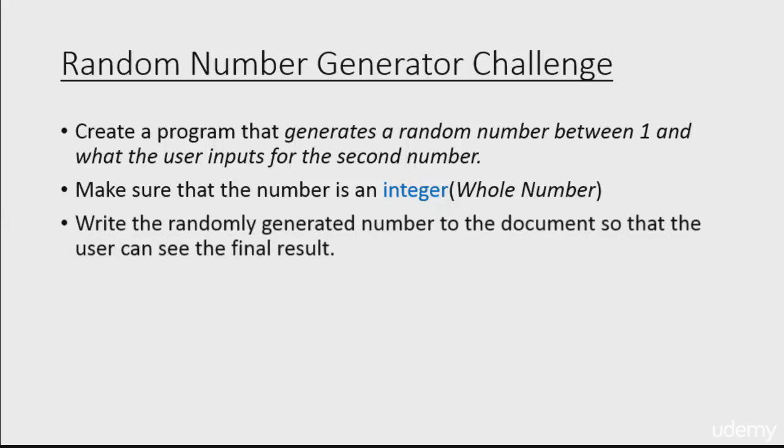Your priority for this challenge is to do the following. Create a program that generates a random number between 1 and what the user inputs. For example, your user inputs the number 20. Your program must then generate a number between 1 and 20. Then write it to the document so the user can see the random number generated.